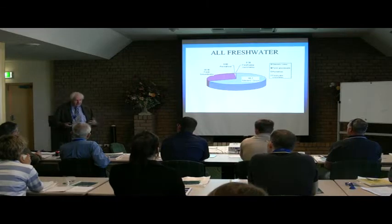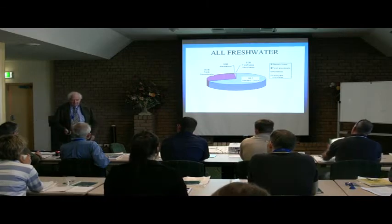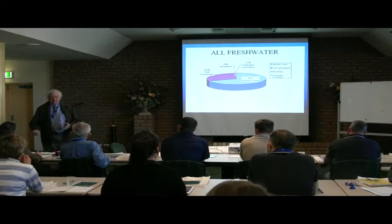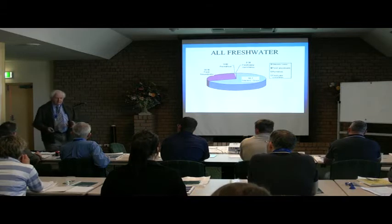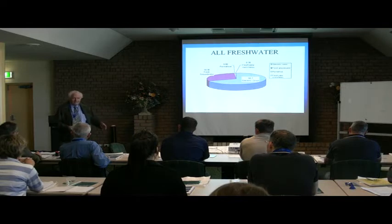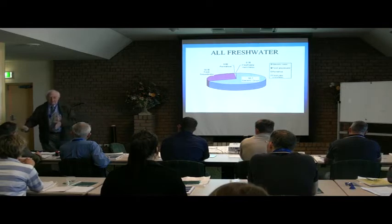For example, in the state where I come from — Victoria — the amount of groundwater is largely in storage. It's moving very slowly; you've got low fluxes. But you've got more than a thousand times more water in groundwater than you have in all the streams and dams and lakes and so on of the state.